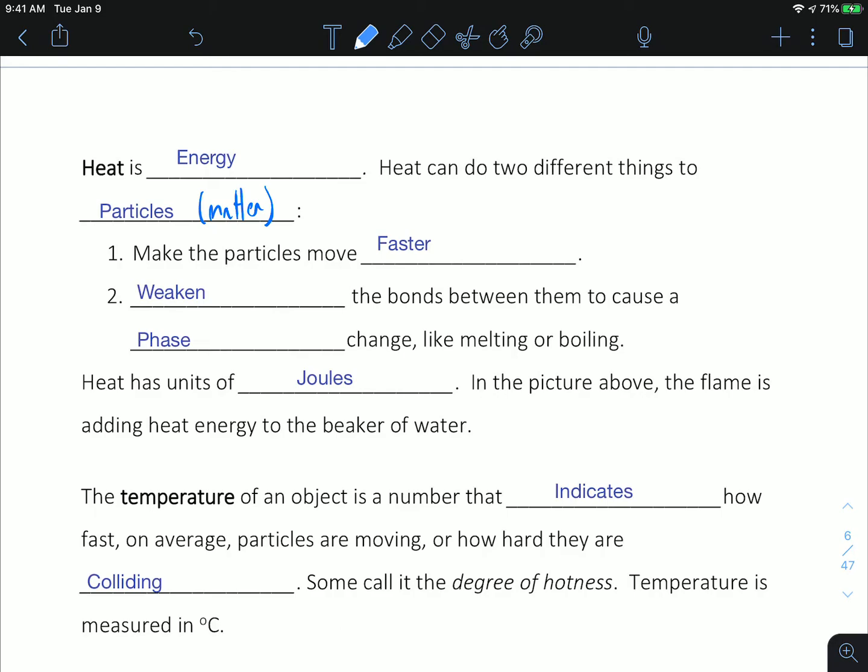Heat can do two different things to particles - particles being matter, so we're talking about the building blocks of our world. This could be gases, particles in a liquid, or particles in a solid. Heat makes those particles move faster, and it can also weaken the bonds between particles, which can cause them to change phases like in melting or boiling.